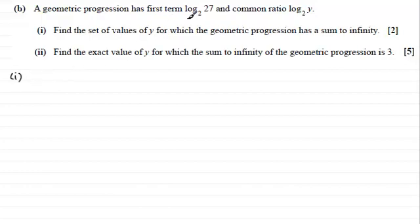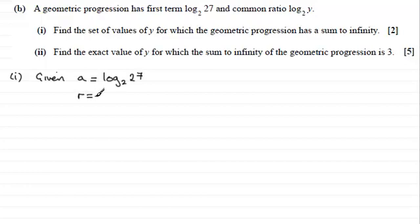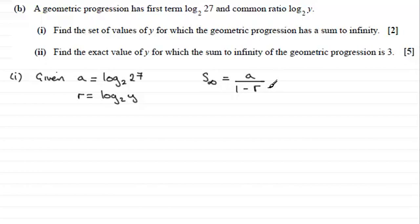For the first part, when we're dealing with geometric progressions the first term is often given the letter a. So the first term a is log base 2 of 27, and the common ratio r equals log base 2 of y. The sum to infinity is given by the formula a divided by 1 minus r, but this is only true if the common ratio lies between minus 1 and 1. So r must lie between minus 1 and 1 for a sum to infinity to exist.